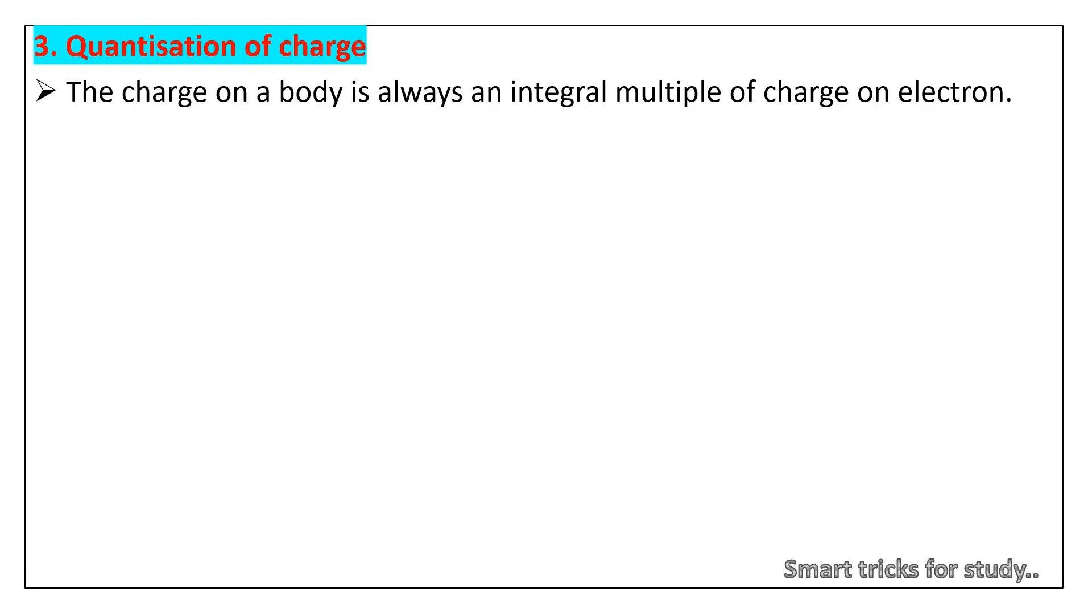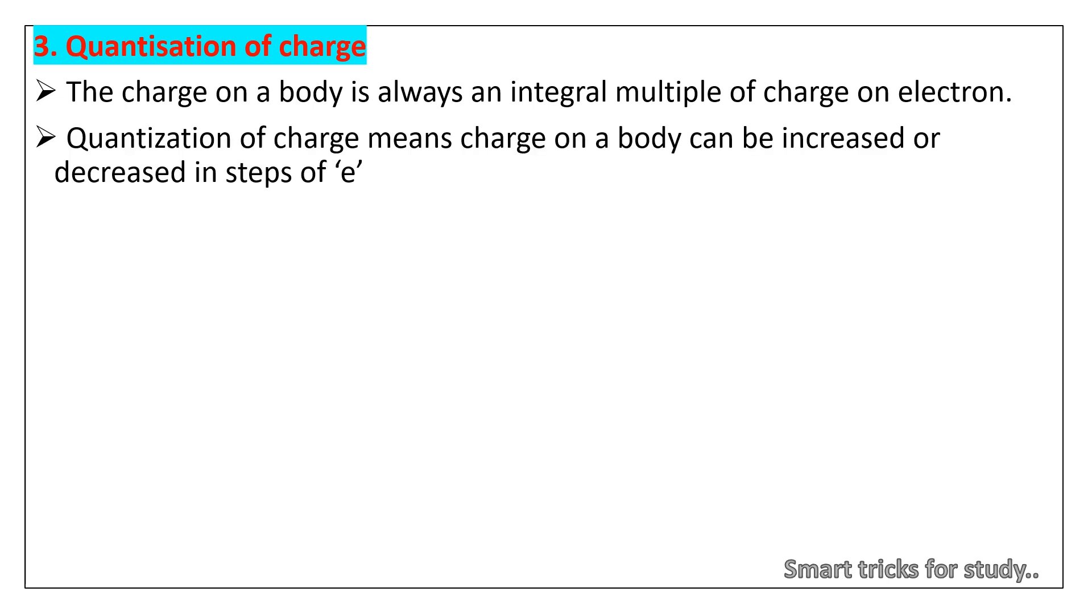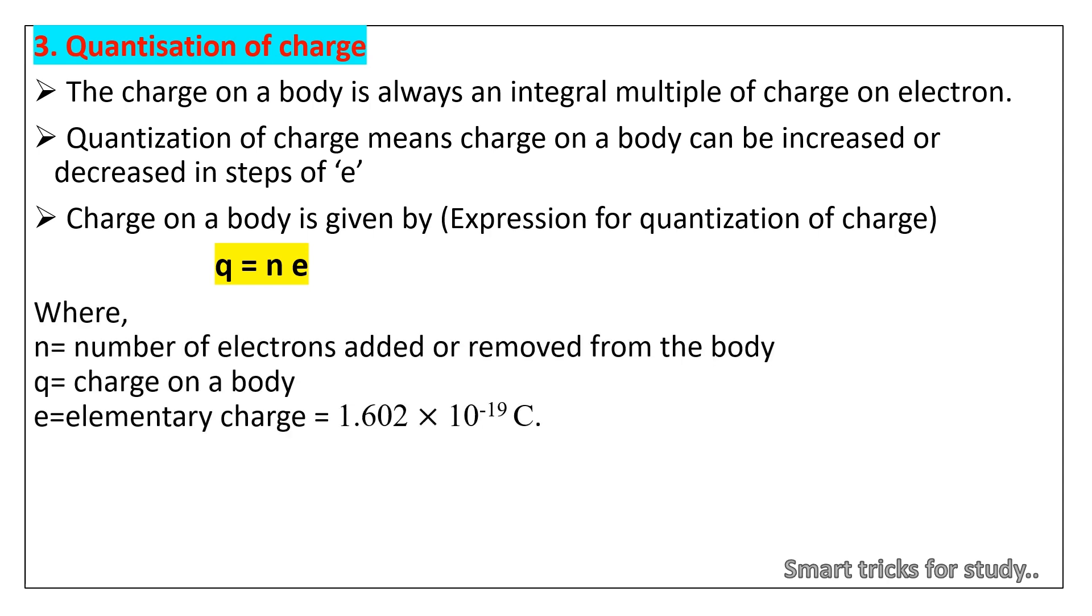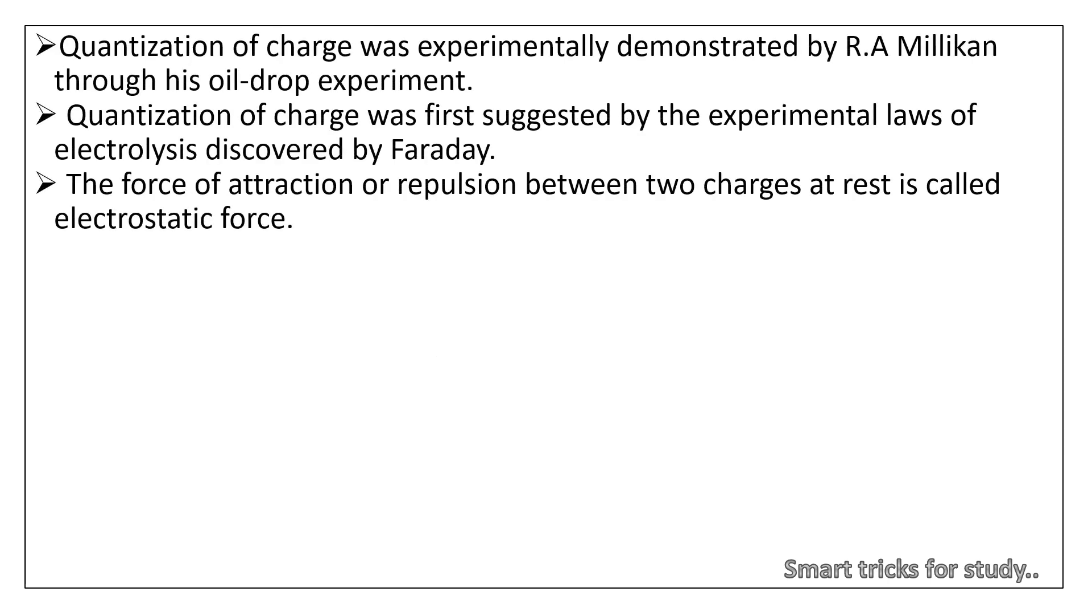3. Quantization of charge. The charge on a body is always an integral multiple of charge on electron. Quantization of charge means charge on a body can be increased or decreased in steps of e. Charge on a body is given by expression for quantization of charge: Q = ne. Where n equals number of electrons added or removed from the body, Q equals charge on a body, e equals elementary charge = 1.602 × 10⁻¹⁹ coulomb. SI unit of charge is coulomb, denoted by C. Quantization of charge was experimentally demonstrated by Robert Millikan through his oil-drop experiment. Quantization of charge was first suggested by the experimental laws of electrolysis discovered by Faraday. The force of attraction or repulsion between two charges at rest is called electrostatic force.